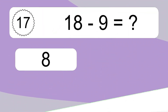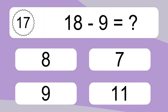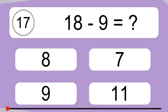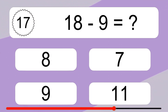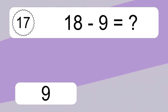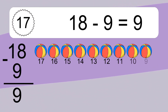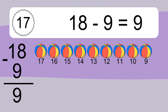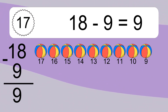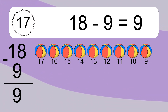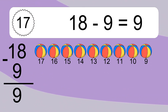18 minus 9 equals what? 18 minus 9 equals 9. Let's count it: 17, 16, 15, 14, 13, 12, 11, 10, 9.